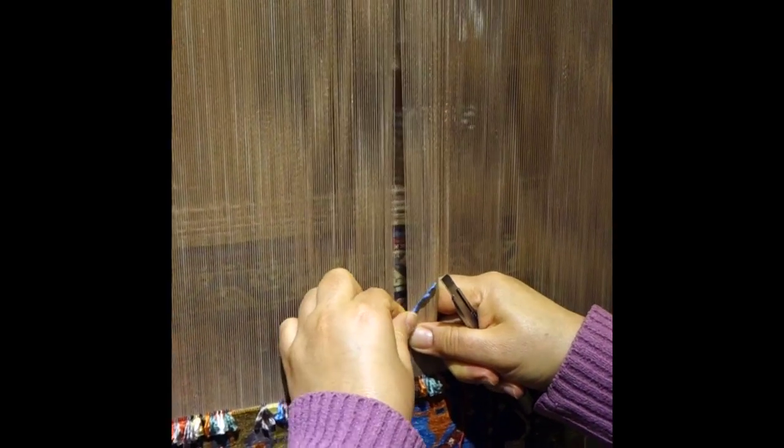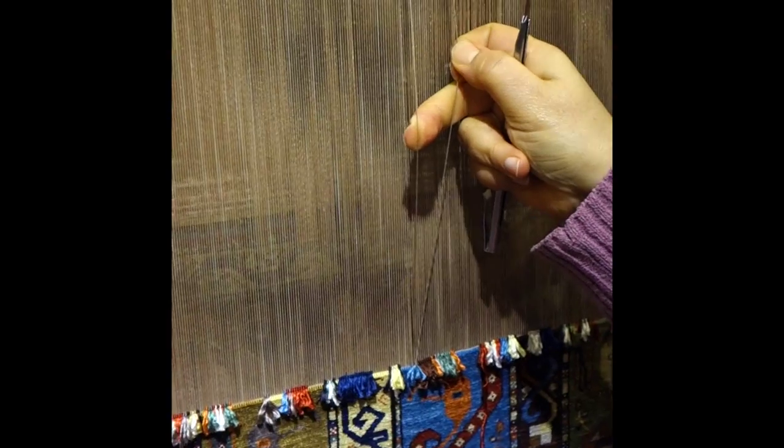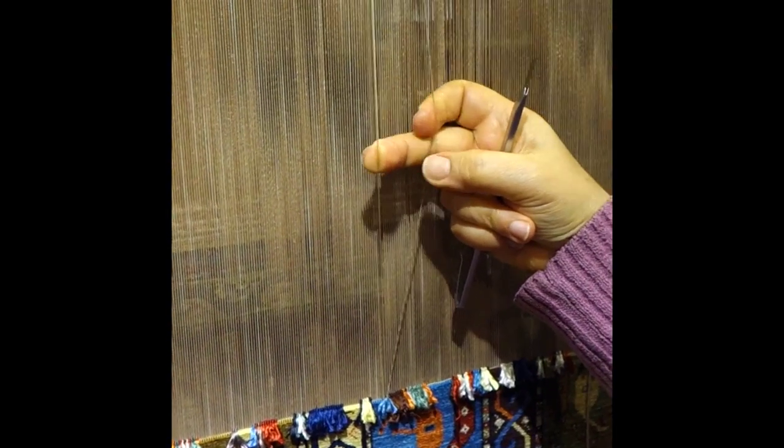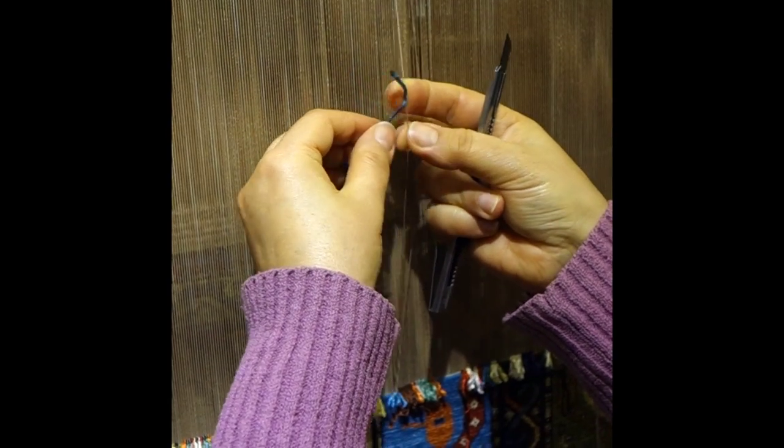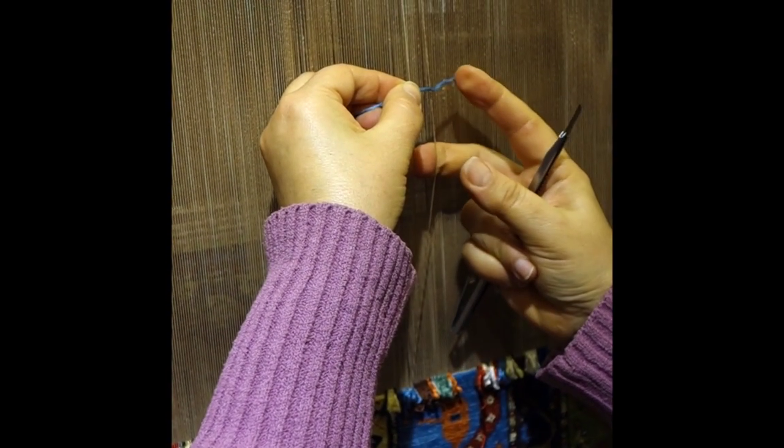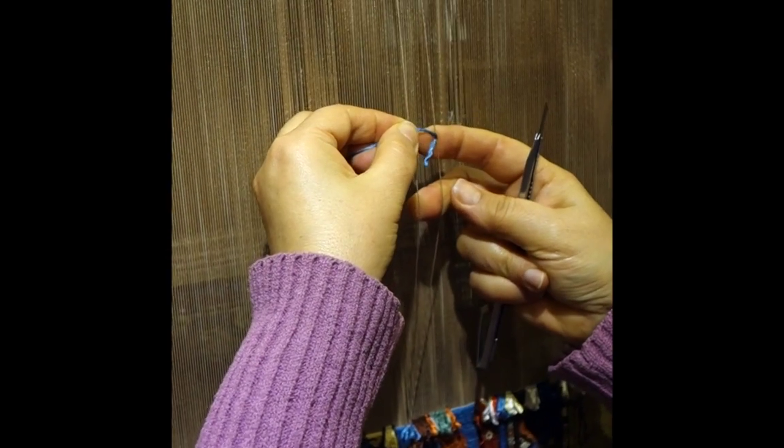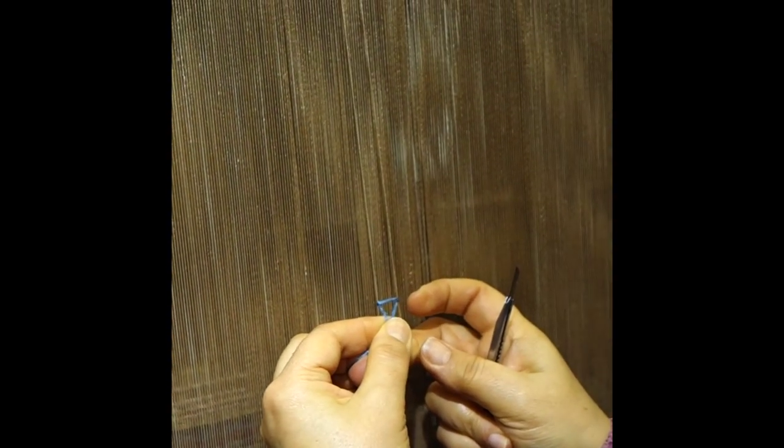First she holds two warp threads. It's very hard. It's turning around these two warp threads. So she just tied the double nut. Do you see?